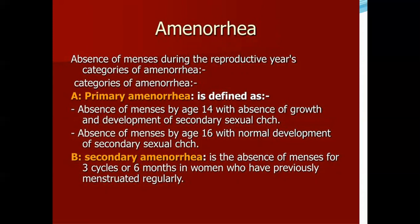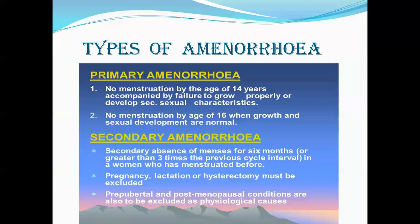Alternatively, primary amenorrhea can be absence of menses after 16 years of age with normal sexual development — here gonadal hormones are present normally but there is another cause for absent menses. Secondary amenorrhea is when a woman who was regularly menstruating misses three consecutive cycles or has no menstruation for six months.